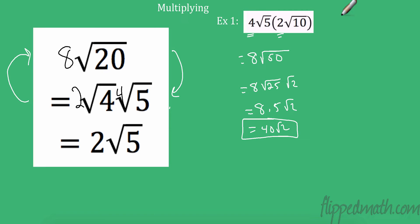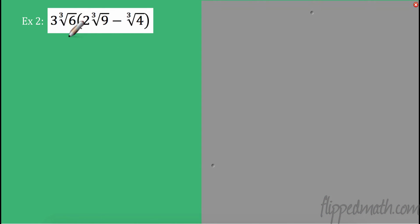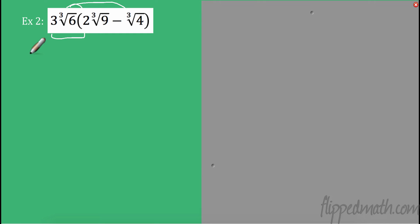That's the simple version of multiplying two radicals together. Now we can step it up. We're not doing anything differently — we have a distribution, and we know that when we distribute we are multiplying. This time we have the third root. If I have a third root, I can multiply by third roots and they stay in. I multiply the first outside times outside: 3 times 2 is 6, and then I have the cube root of 6 times 9, which is 54.